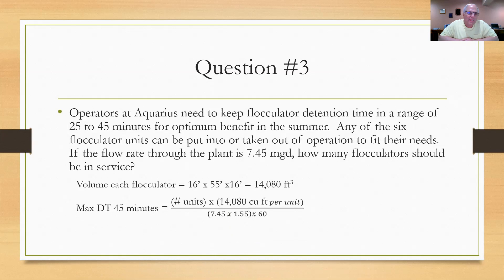Volume of each flocculator I figured out to be 16 by 55 by 16 or 14,080 cubic feet. I set up the problem this way. I put the detention time of 45 minutes. That's the max time I'd rather be there. I don't want to be there anything more than that. I'm going to solve for the 45 minute range, even though they said 25 to 45. The max number that I would have on would have to give me at least 45 minutes. I'm going to set that equal to the number of units, which is x. I'm going to have to solve for that, times 14,080 cubic feet per unit,